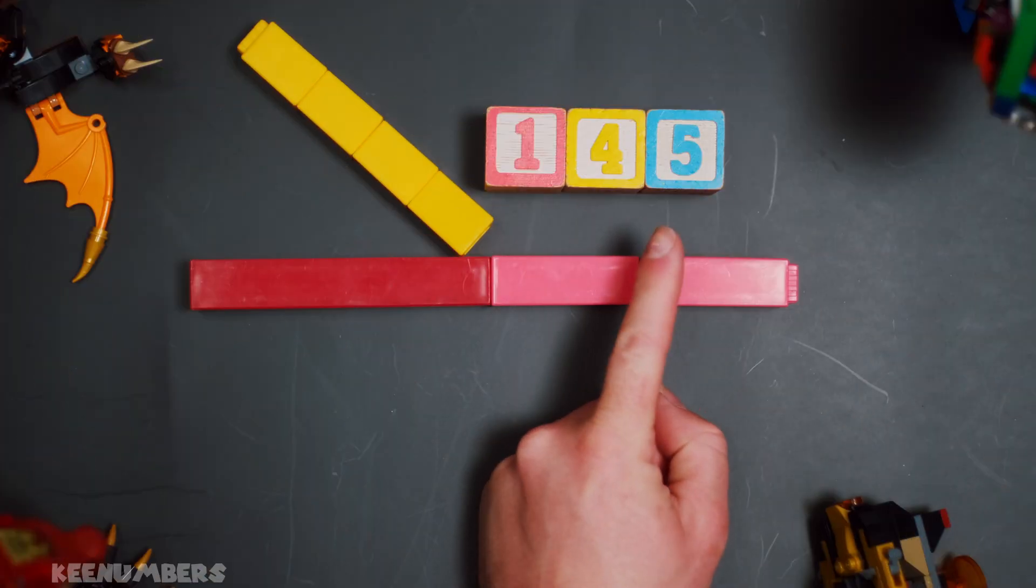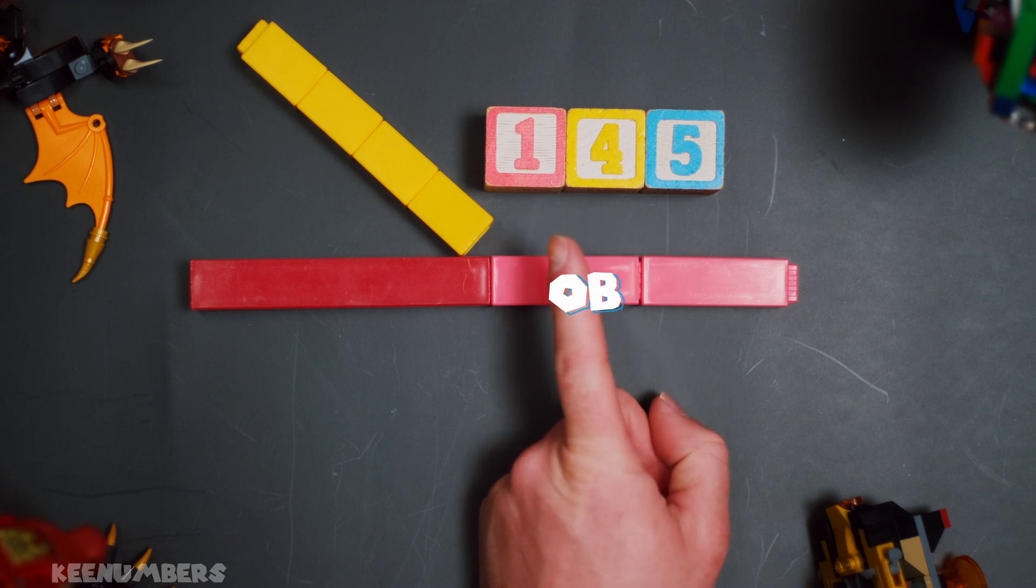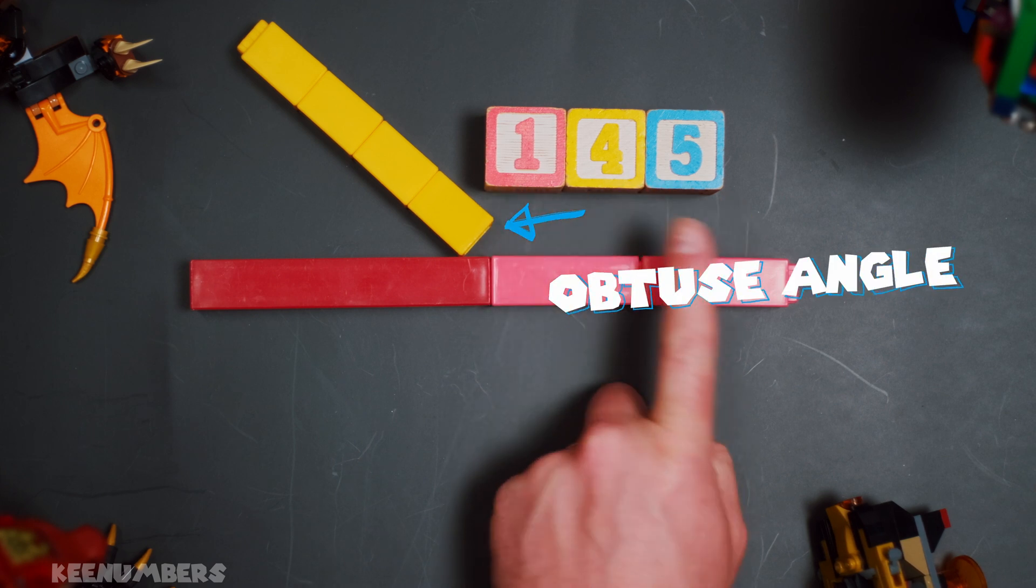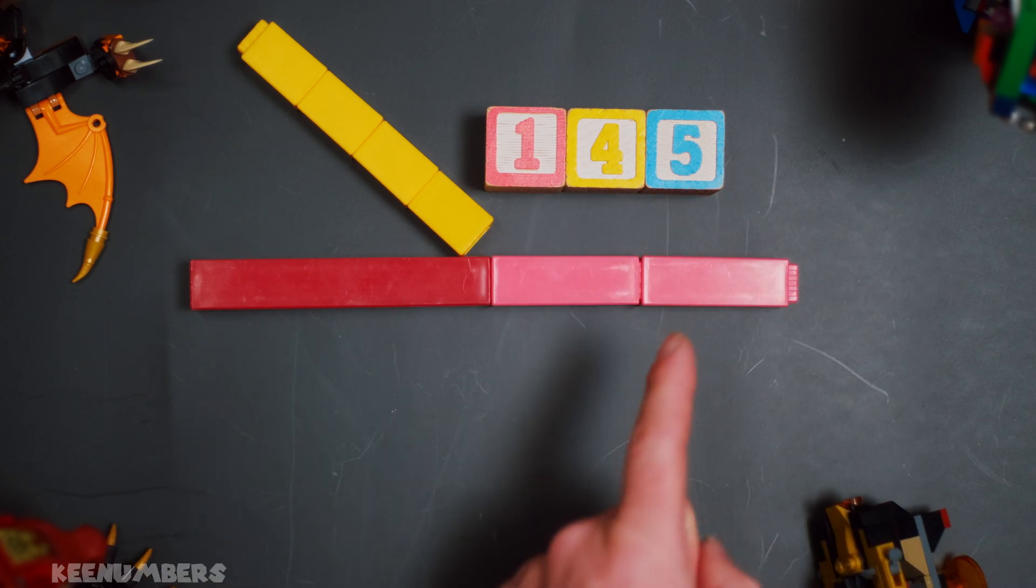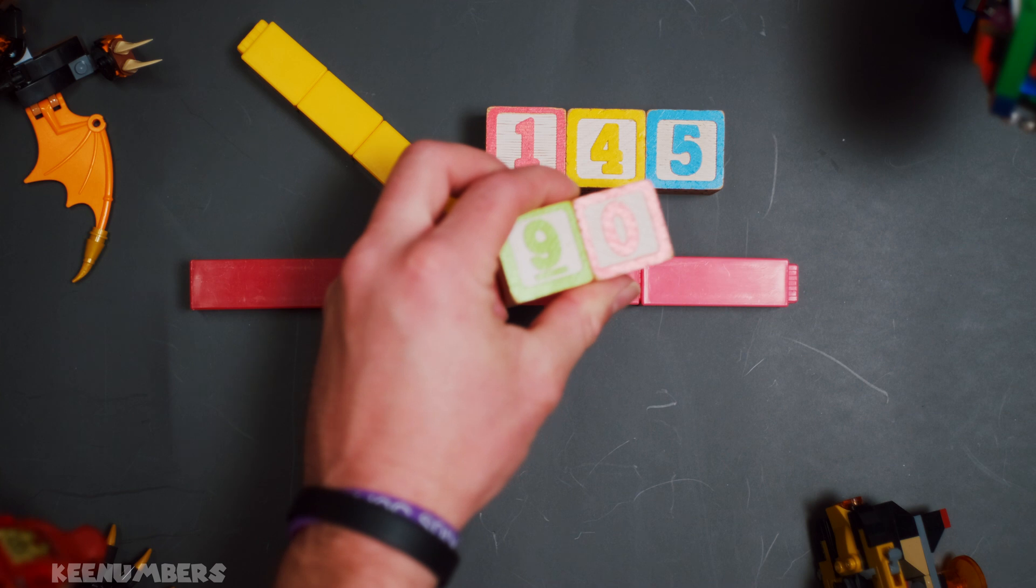The supplementary and complementary angle of 145. Oh, that's another trick question. This is an obtuse angle, 145. So it's got no complementary angle. It's too big. It's greater than 90.